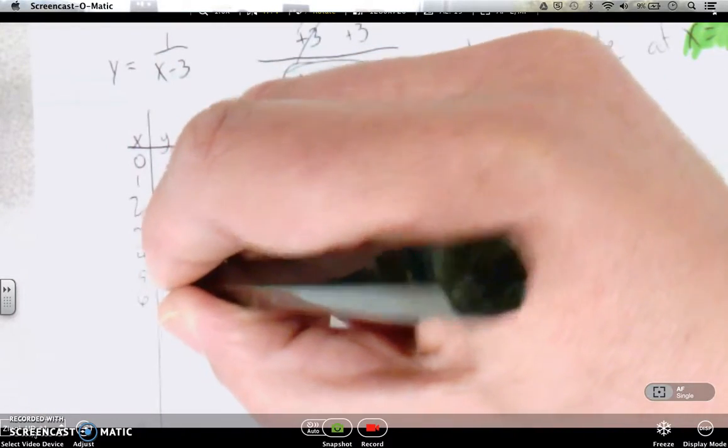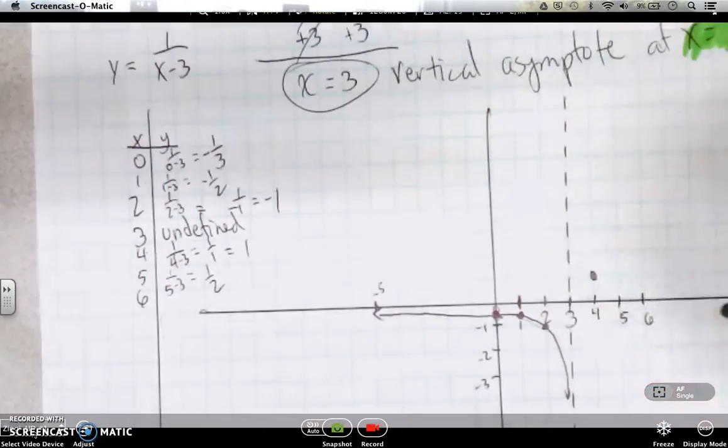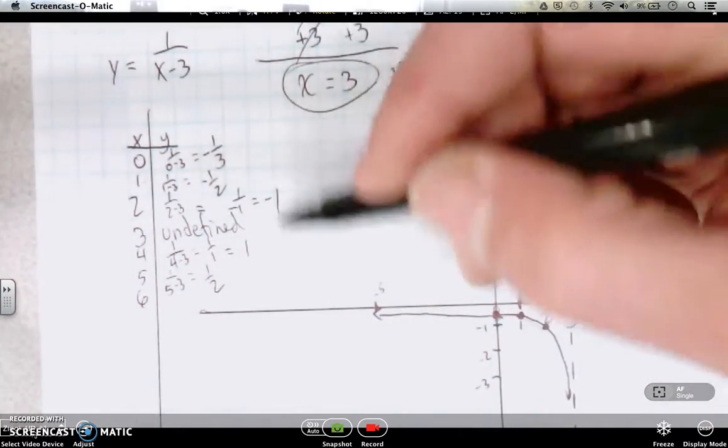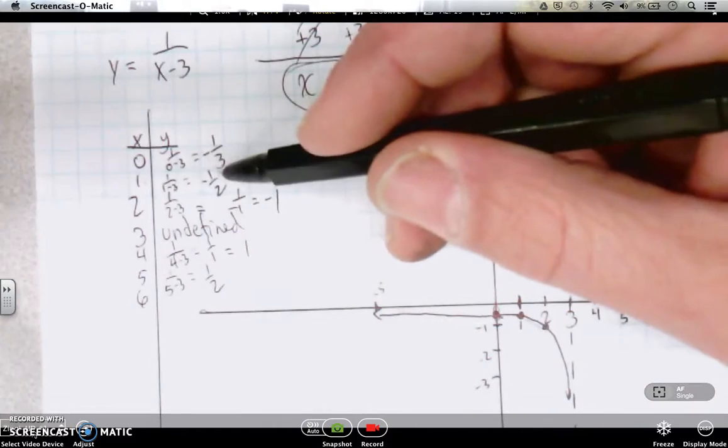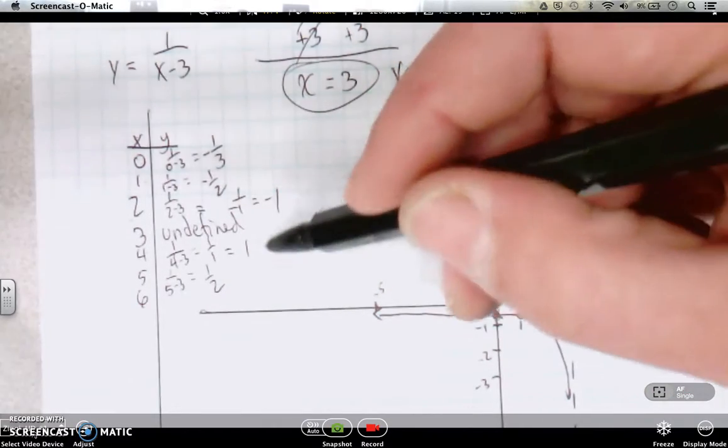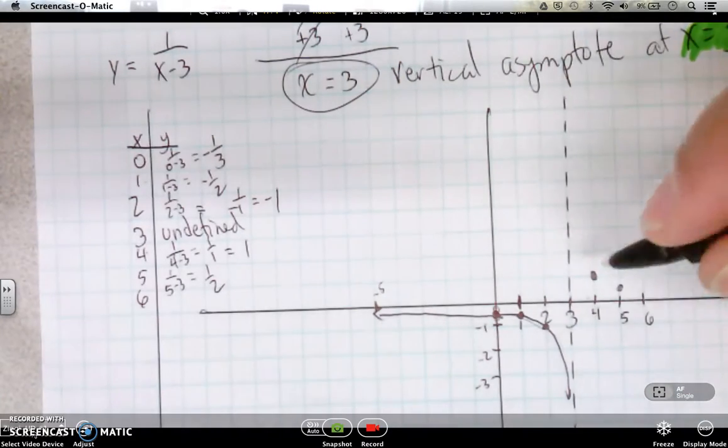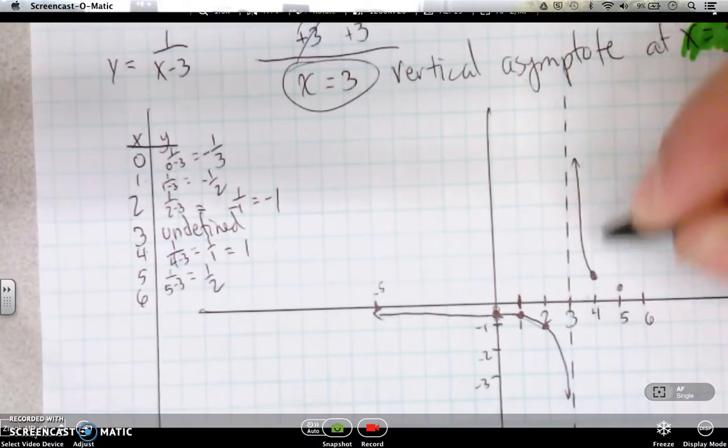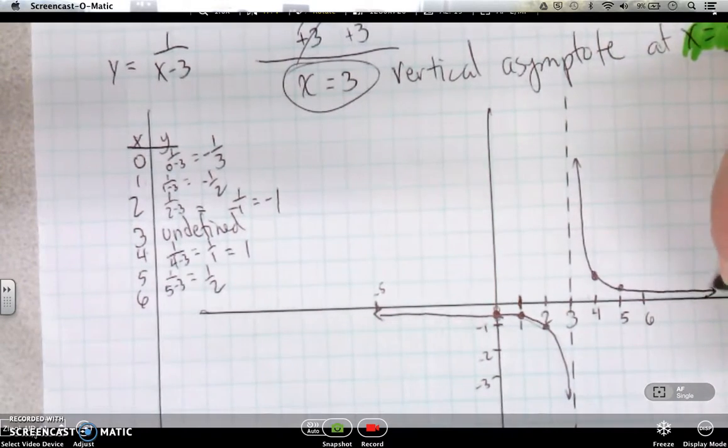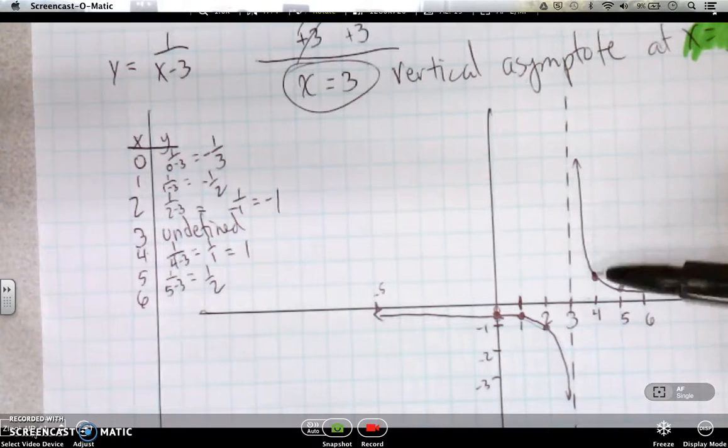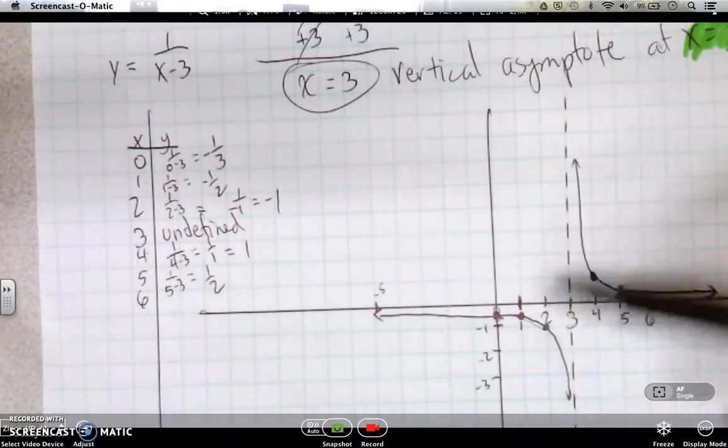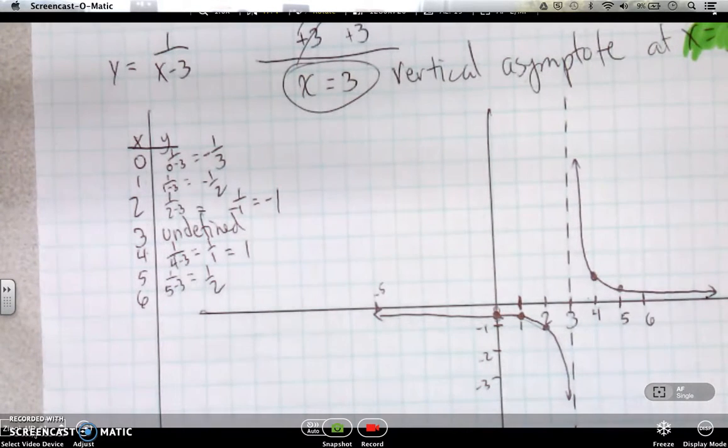5 will go 1 over 5 minus 3. And again, it's 1 half. And then 6 will be the same. So what you're noticing here is the numbers are the same. We had a negative 1 half. We had a positive 1 half. We had a negative 1. We had a positive 1. Not always going to be exactly like that, but the reason that is is the symmetry. If you look at these, this point corresponds with this point. They have mirror images of each other.